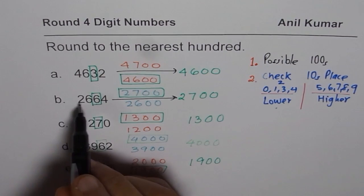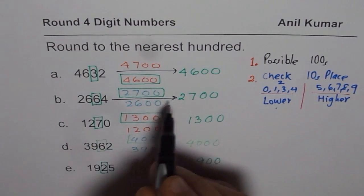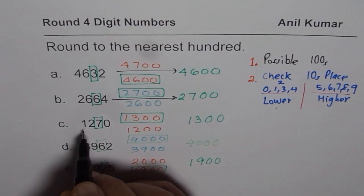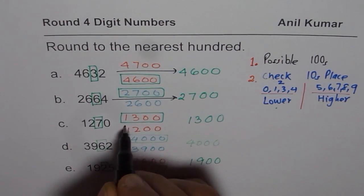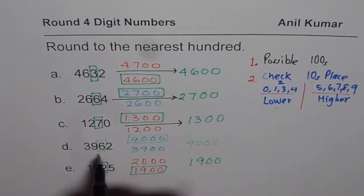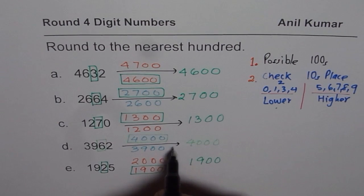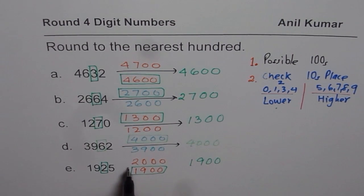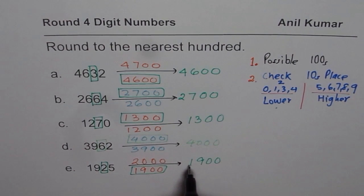2,664 rounds to 2,700. 1,270 rounds to 1,300. 3,962 rounds to 4,000. And 1,925 rounds lower to 1,900 since tens position was 2. So that is how we do rounding. I hope the concept is clear. Thank you and all the best.